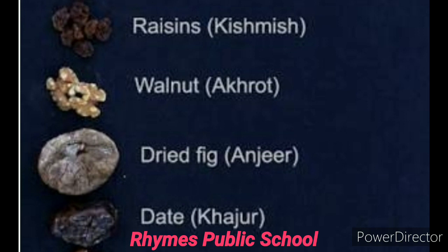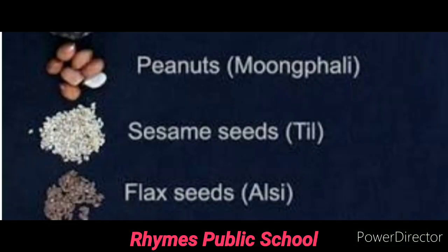Khajur, ya pind khajur — yeh to hum sabhi ko bahut pasand hota hai. Isse English mein kaha jata hai date. Next is mungfali. Aap sabhi apne gharon mein dekhte hain mungfali. English mein isse kaha jata hai peanut. Isse groundnut bhi kaha jata hai, but practically we call it peanut.